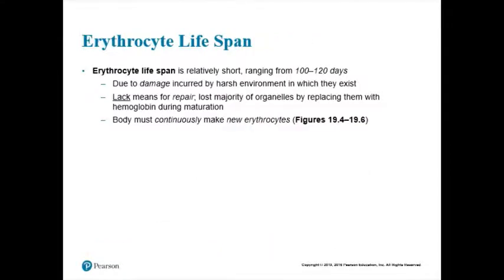Some cells in our body will live almost as long as we do, so why do red blood cells only last a couple months? Once red blood cells get older, they kick out important organelles like the nucleus. If you kick out the nucleus, you lose the DNA — the blueprints for making things. As a red blood cell travels around the body, it might get damaged, and it won't be able to repair itself because it's lost those organelles. That's why red blood cells typically last only 120 days.